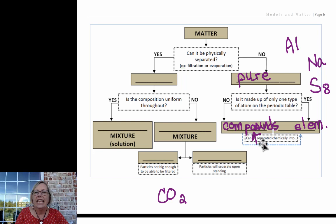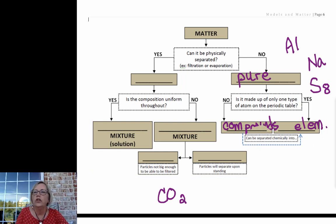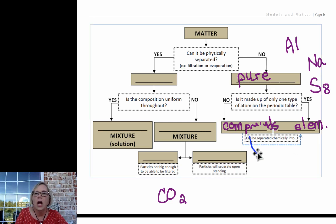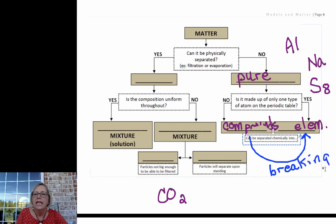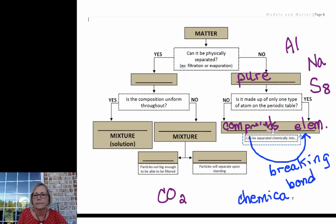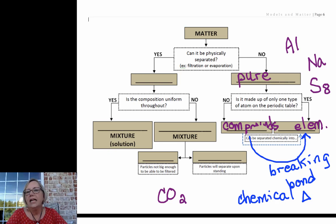We would need a chemical change, not a physical change, in order to convert compounds to elements. This requires breaking bonds, and if you break a bond, that's a chemical change. I'm going to use the symbol delta. You should write down: delta means change. You should see that in your notes.